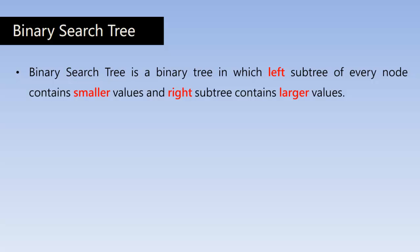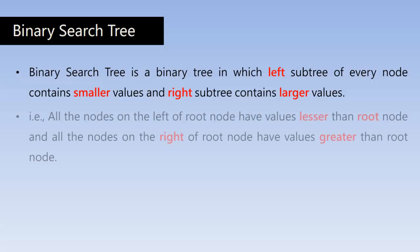A binary search tree is also a binary tree. In a binary tree, there can be a maximum of two children for any node — there can be one child, zero children, or a maximum of two children. A binary search tree is a binary tree in which the left subtree of every node contains smaller values and the right subtree contains larger values. That is, all the nodes on the left of the root node have values lesser than the root node, and all the nodes on the right have values greater than the root node. This definition applies recursively to every node in the tree.